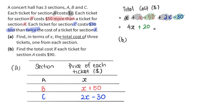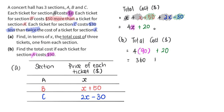For part b, if section A costs 90 dollars, then x equals 90. The total cost is 4 times 90 plus 20, which equals 360 plus 20, giving 380 dollars. That concludes this question.